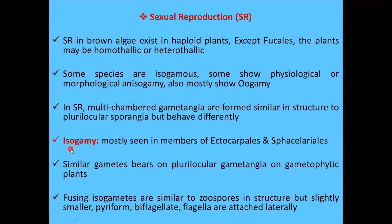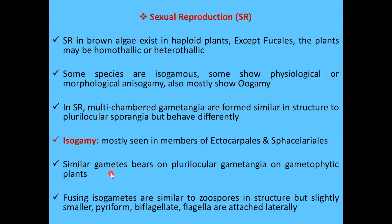Isogamy is a sexual process in which both the male and female gametes are similar in structure and size. It is mostly seen in members of Ectocarpales and Sphacelariales. The similar gametes are borne on plurilocular gametangia on the gametophytic plants, which are haploid in nature.